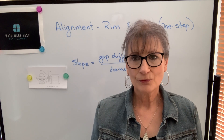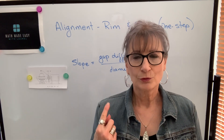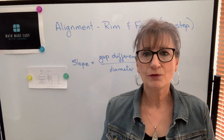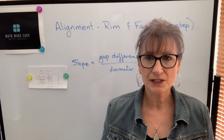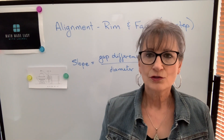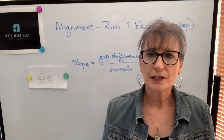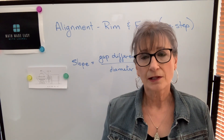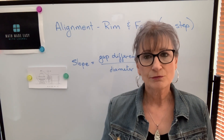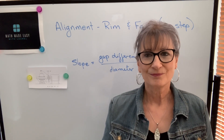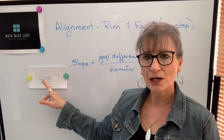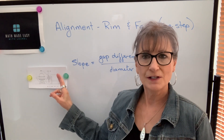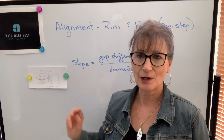There are two different one-step methods: one's called rim and face and the other one is called cross-dial. Those names refer to how the information is obtained. Rim and face means that you get information about the misalignment through dial indicators using a face reading and a rim reading. You'll be mounting a dial indicator typically on the fixed shaft and taking a face and rim reading on the movable coupling.